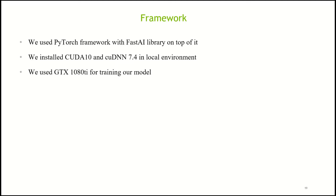We employed PyTorch with the FastAI library on top of it to build our model. PyTorch offers easy-to-use GPU-accelerated tensor computation and a very rich API for neural network applications. PyTorch computation graphs are dynamic in nature, which means the user can change the execution of the graph at each iteration. This offered us a great deal of flexibility while trying out different things and doing experimentation while designing our model.